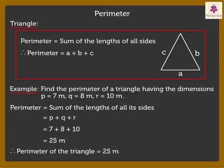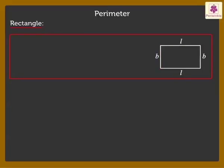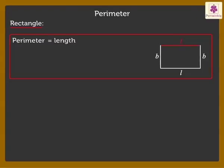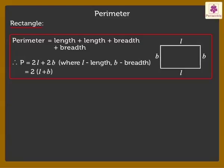Now, let us look at the formula for the perimeter of a rectangle. A rectangle has four sides, wherein its opposite sides are equal in length. Thus, the perimeter of a rectangle is equal to length plus length plus breadth plus breadth. Therefore, perimeter is equal to 2 times L plus 2 times B, where L is the length and B is the breadth, which is equal to twice of length plus breadth.